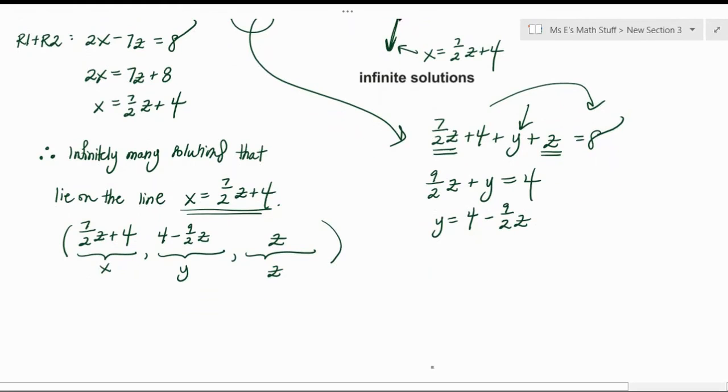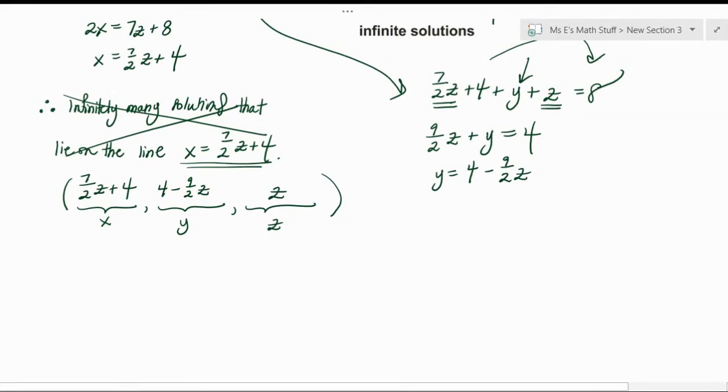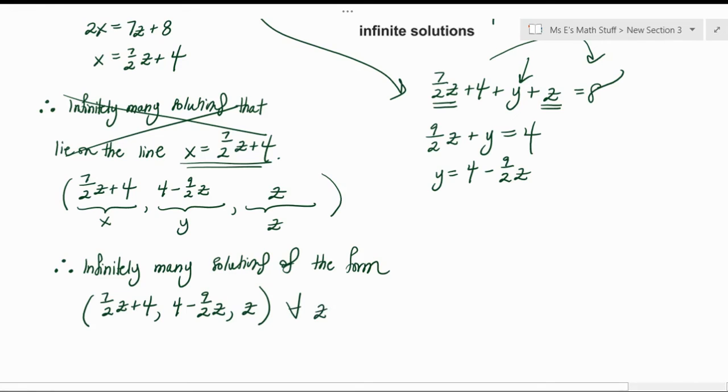Okay, and then so this is an ordered triple written in terms of one of the variables. So the way we're actually going to write our answer is not like this, even though that is essentially what we're trying to say. We're going to say therefore there are infinitely many solutions of the form, and then you just copy this little ordered triple that you have: 7/2 z plus 4 goes in for x, 4 minus 9/2 z is the formula to get your y coordinate, and we're getting this whole thing in terms of z, so you just put z in the z coordinate spot.